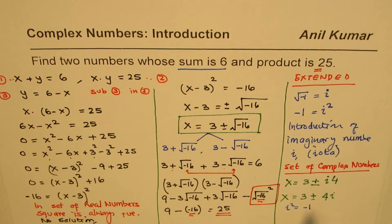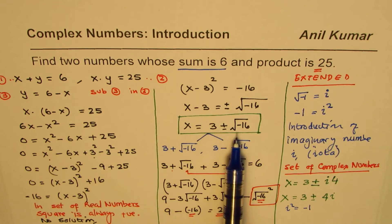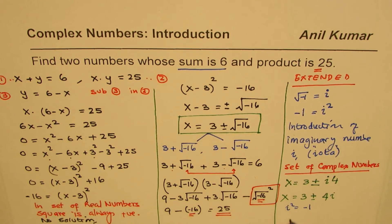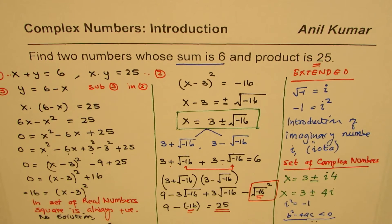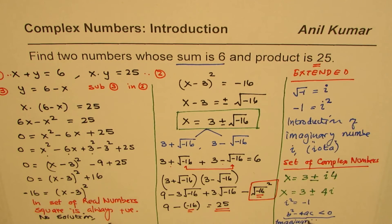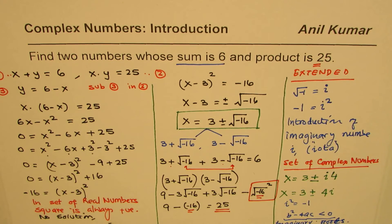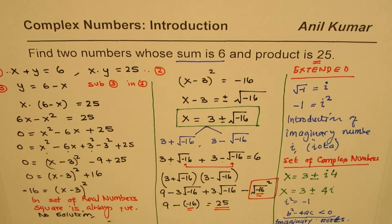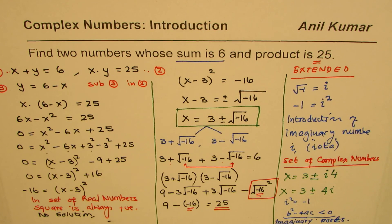That is our introduction to complex numbers. It helps us find solutions to equations where the quadratic formula gives b² minus 4ac less than zero — a negative discriminant. We may not have real roots, but we can have imaginary roots in such situations. We'll further explore how this introduction of i, where i² equals −1, helps us understand mathematics and real-life situations far better. I'm Anil Kumar — I hope that helps. Thank you and all the best.